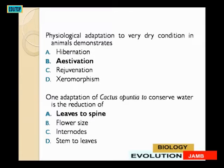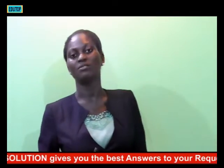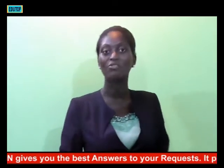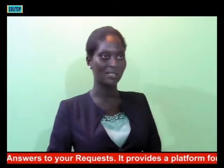One adaptation of the cactus Opuntia to conserve water is the reduction of what? A: reduction of leaves to spines; B: reduction of flower size; C: reduction of internodes; D: reduction of stem to leaves. You have seen a cactus plant with its spines — the answer is A: reduction of leaves to spines. Even though they are green wood, it has reduced the leaves to spines to conserve water.